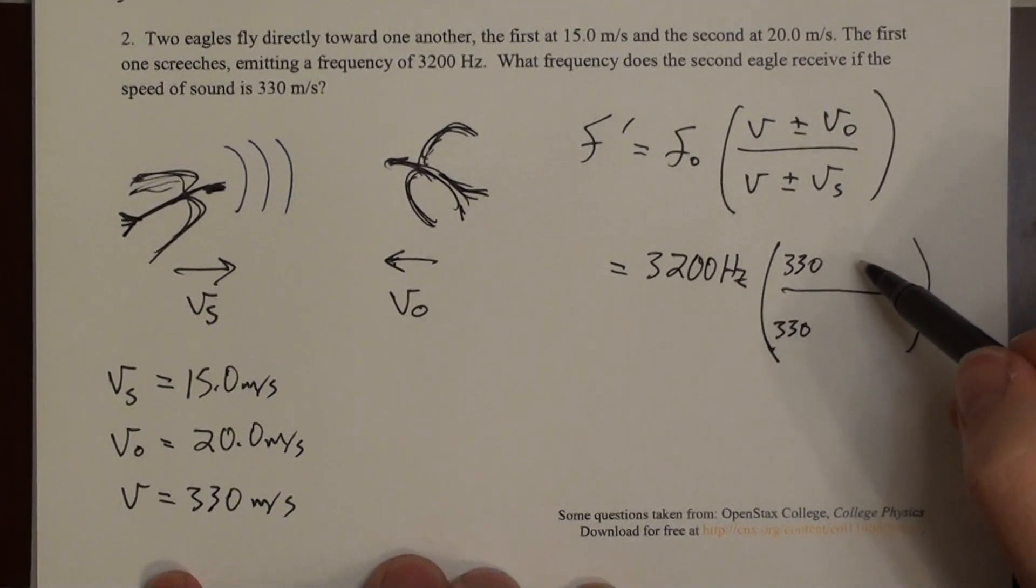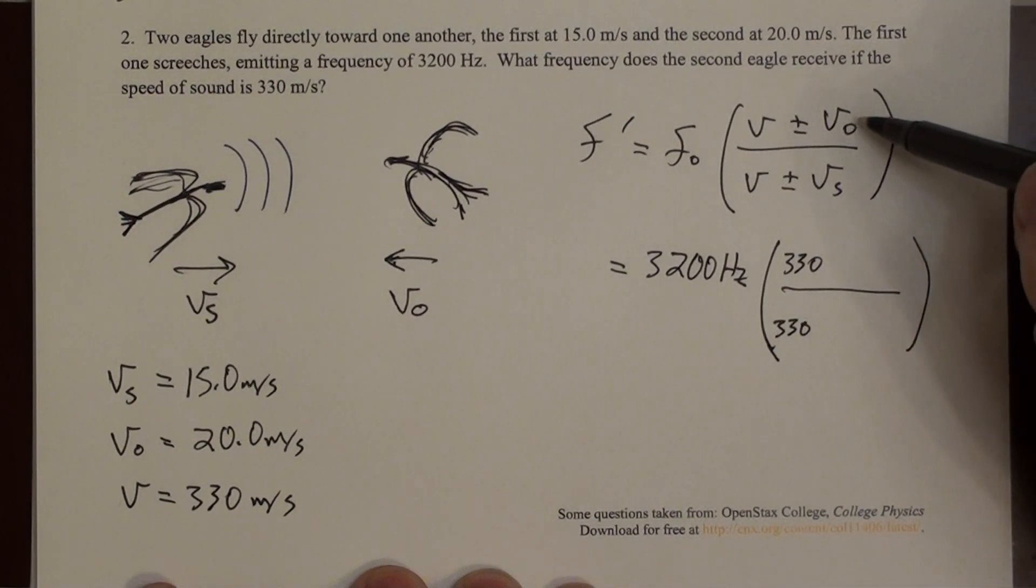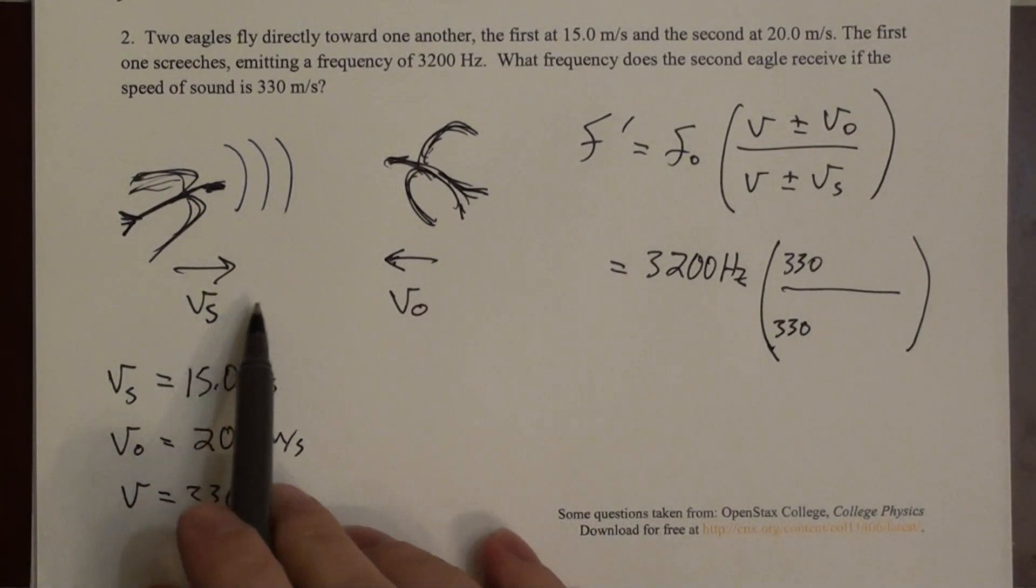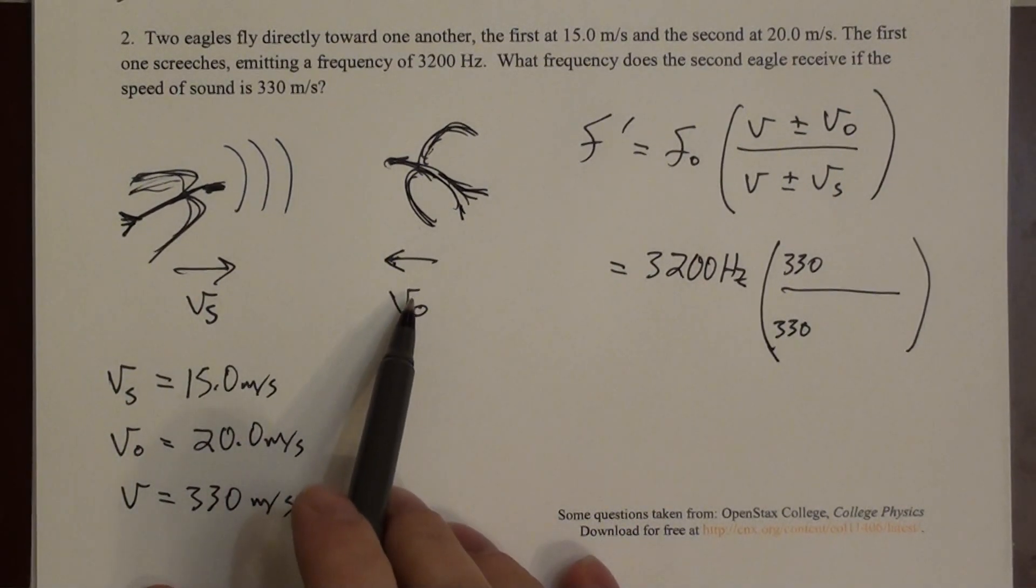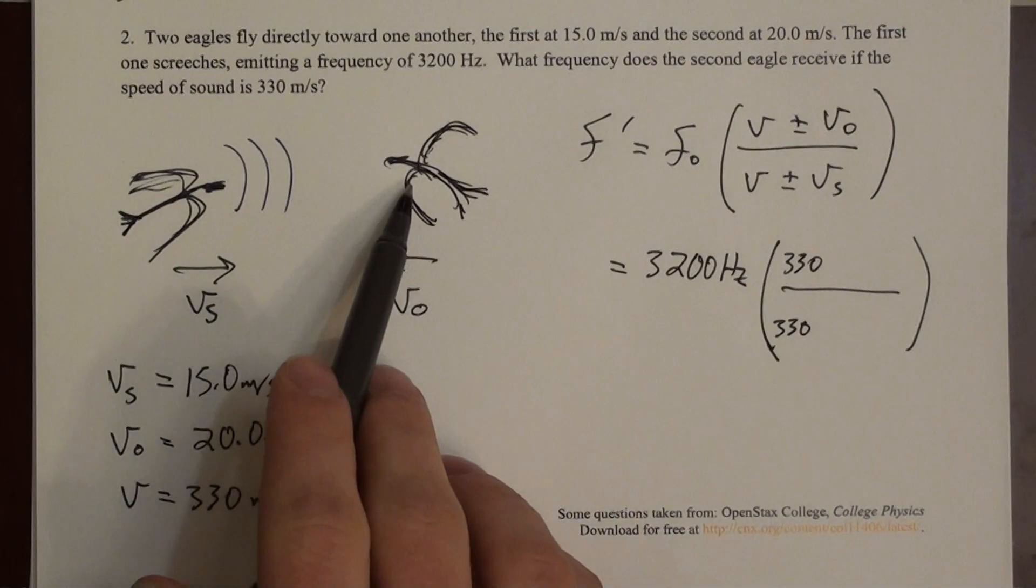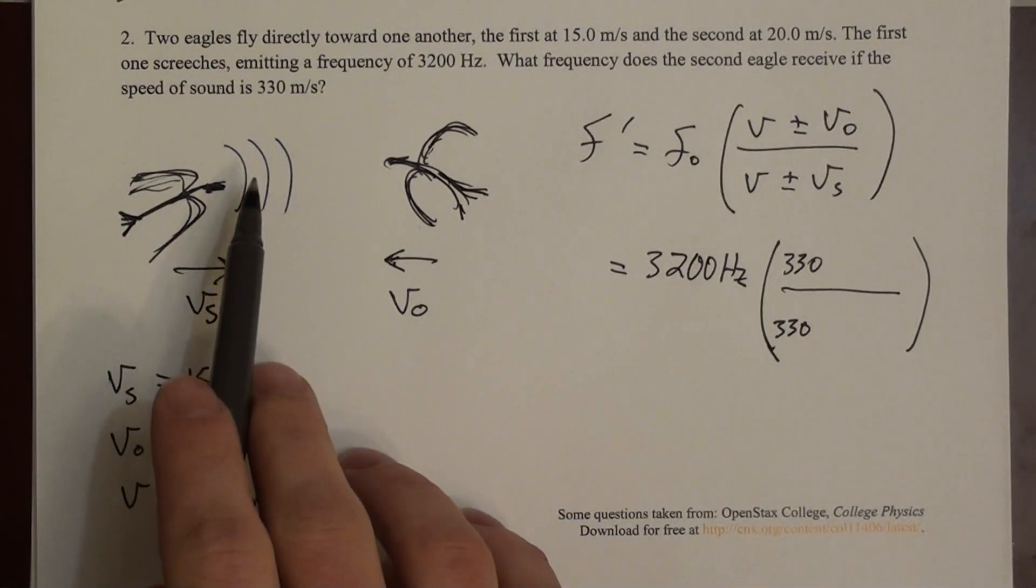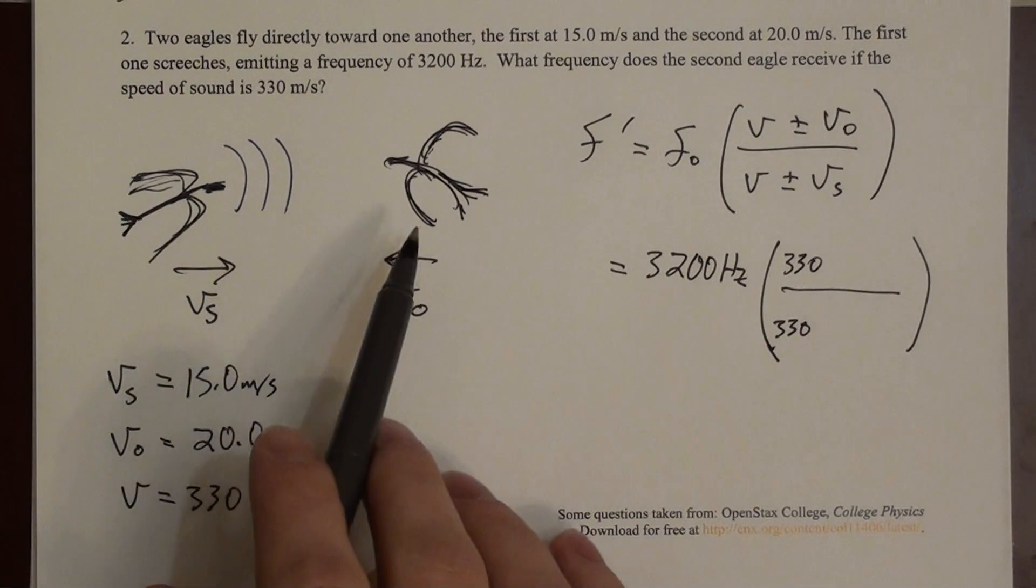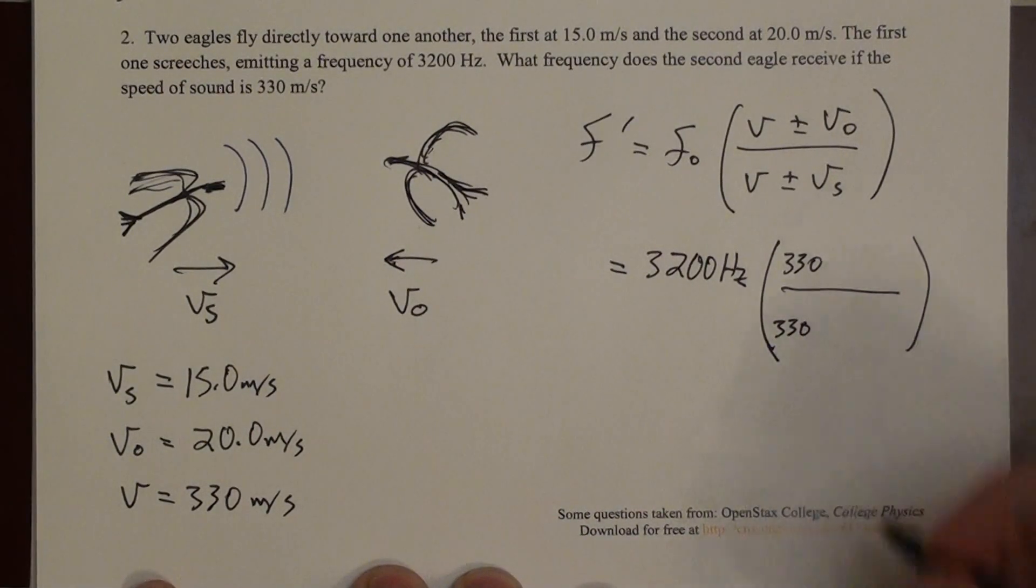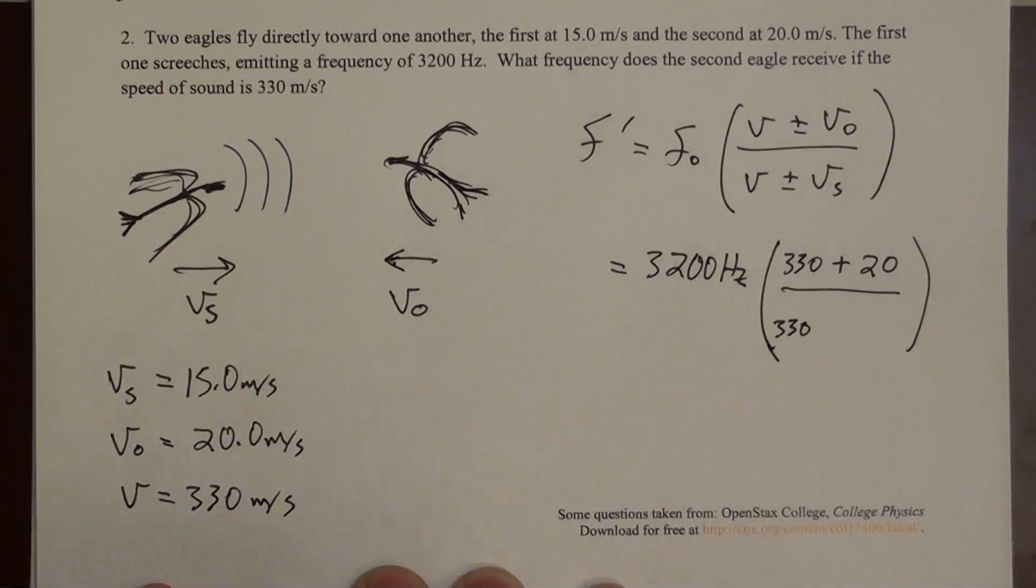And then in the numerator, we have the observing eagle's velocity. So we should look at this situation and say, should the motion of the observer act to increase or decrease the frequency? Because it could do either one. And in this case, the eagle is flying toward the wave fronts. So the eagle is going to receive them more quickly or more frequently than he originally would have, if he were sitting still. So this should act to increase the frequency. So we should add 20 in the numerator, because that's the observing eagle's velocity.